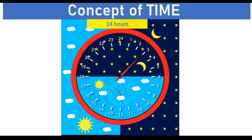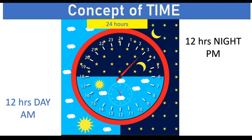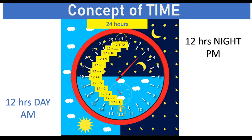A day is made up of 24 hours. The first 12 hours are daytime, which are called a.m., and the next 12 hours are night, which are called p.m. From 12 midnight to 12 noon it is a.m., and after 12 noon it is p.m. The hours we count are from 12 — so 1 p.m. is 13 hours, 2 p.m. is 14 hours, and so on and so forth.